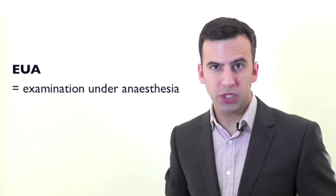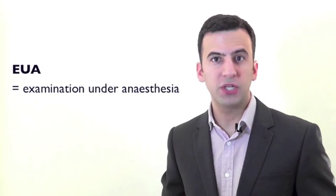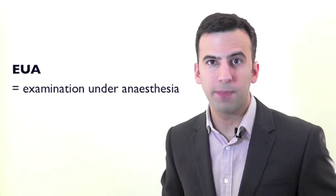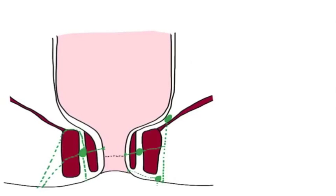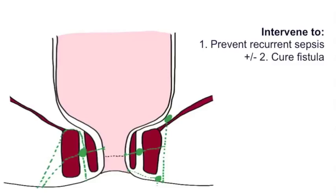The next step is examination under anesthesia, which following patient counseling could also be therapeutic. So here's another look at our coronal section, through the anal canal, together with some of the different fistulas our patient may have. The aim of fistula surgery here is to prevent recurrent sepsis and or to cure the fistula itself.